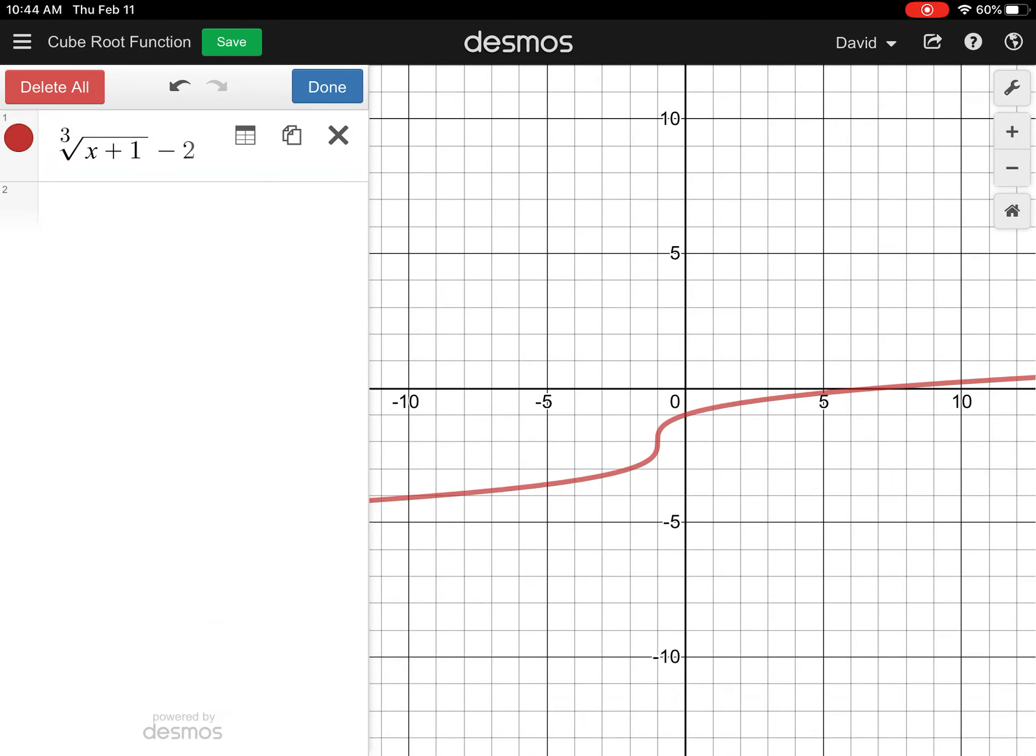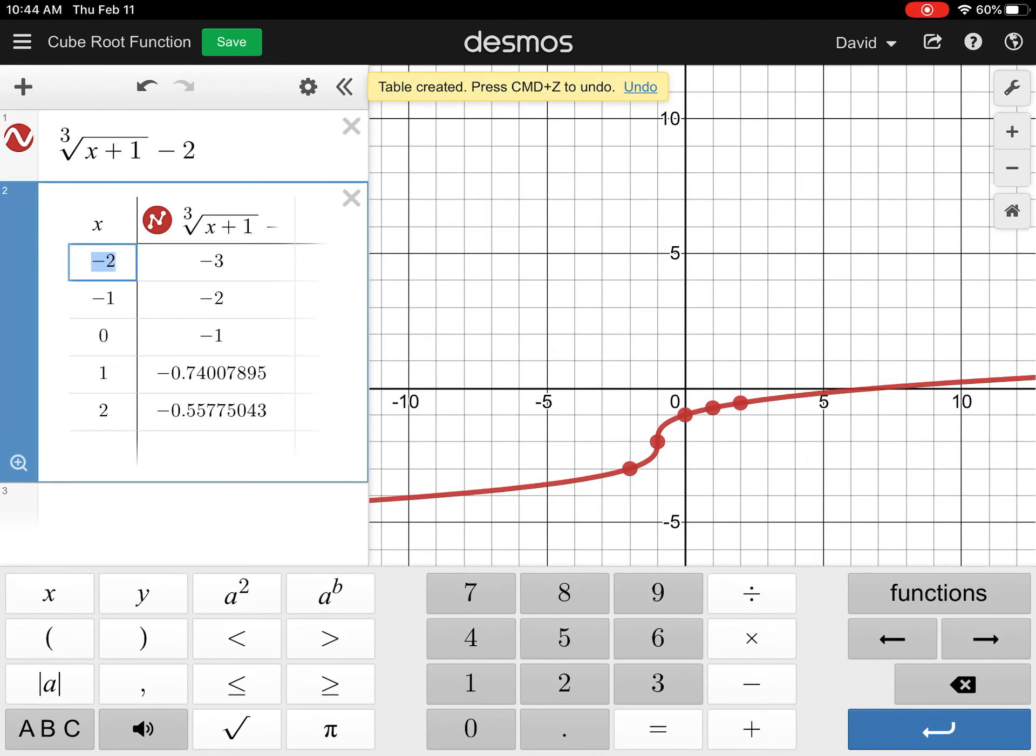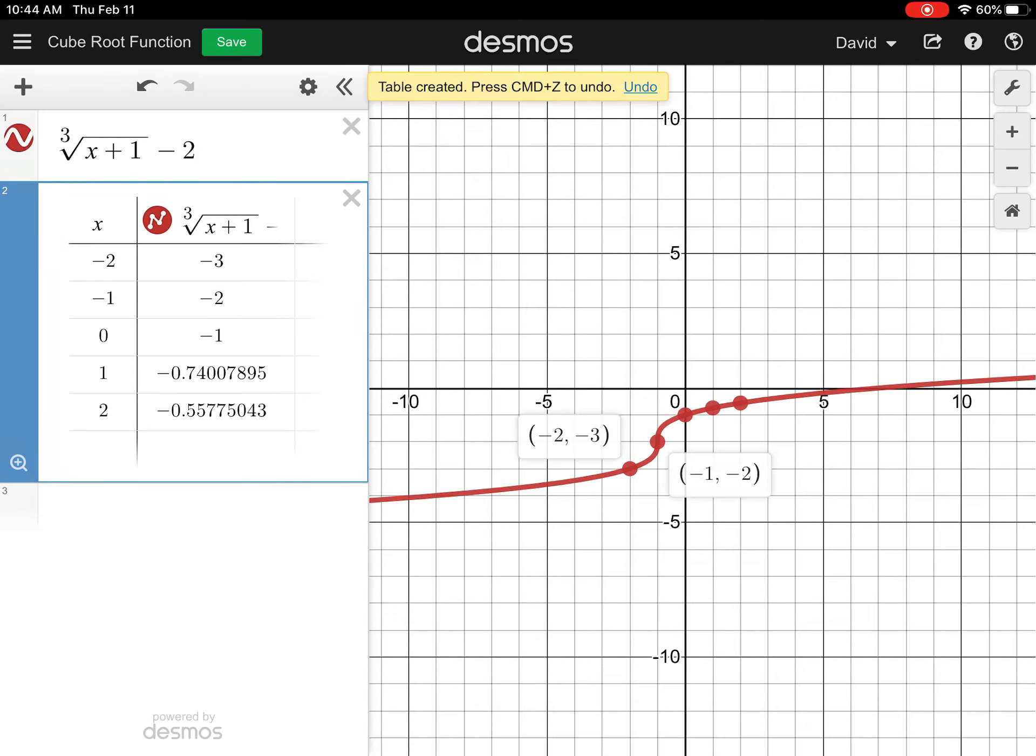If you click that gear symbol, that's how you get to this next table feature. You could duplicate it or make that a table, and you're going to get some good points there. These ones that have whole numbers are really good.